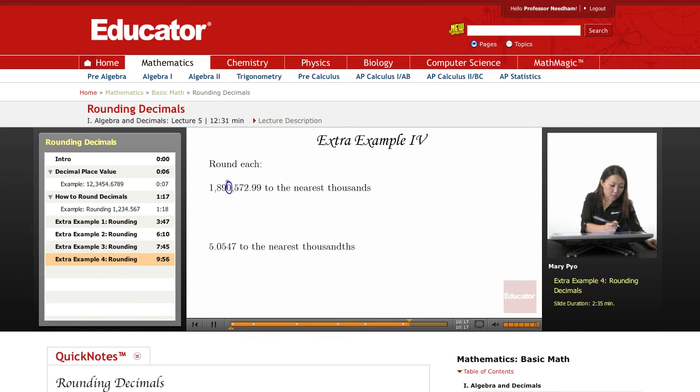So I'm going to circle that. The number before it is a 5. It's 5 or greater, so that means I have to change this 0 to a 1. So I'm going to write all the numbers before it. So 1, 8, 9. And instead of writing the 0, I'm going to write the 1.